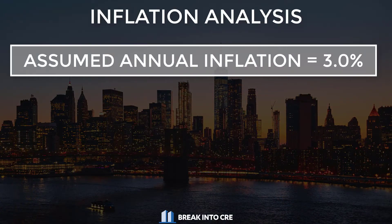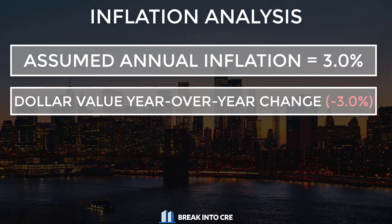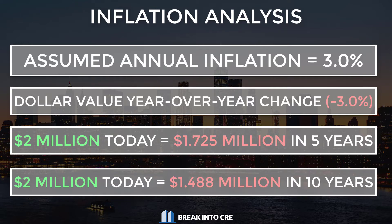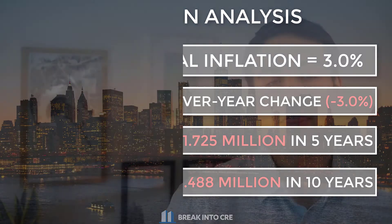The first reason is inflation. If you assume inflation runs at 3% per year, the value of a dollar decreases by 3% annually. That means $2 million in today's dollars is only worth about $1.725 million five years from now. Wait the full 10 years, and that $2 million is only worth roughly $1.488 million — meaning you effectively lose about $237,000 in today's dollars by waiting that extra five years.